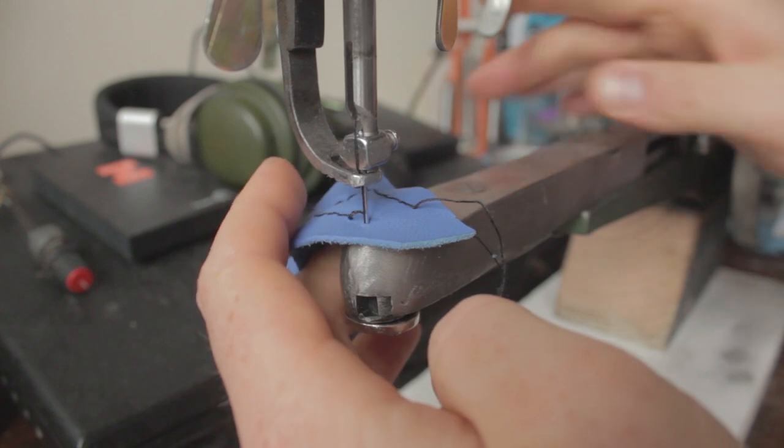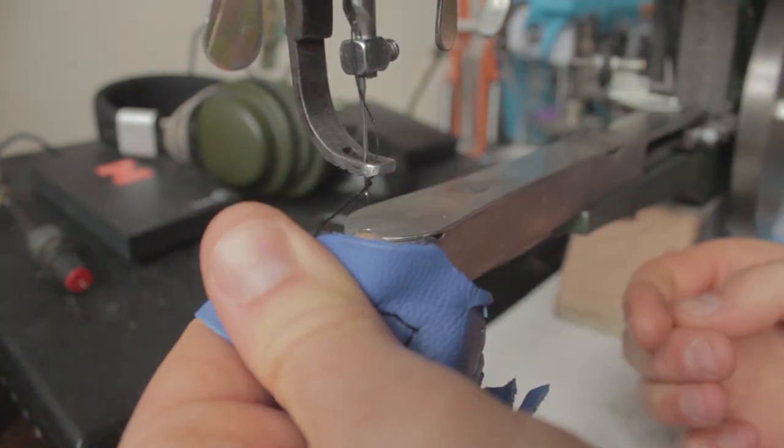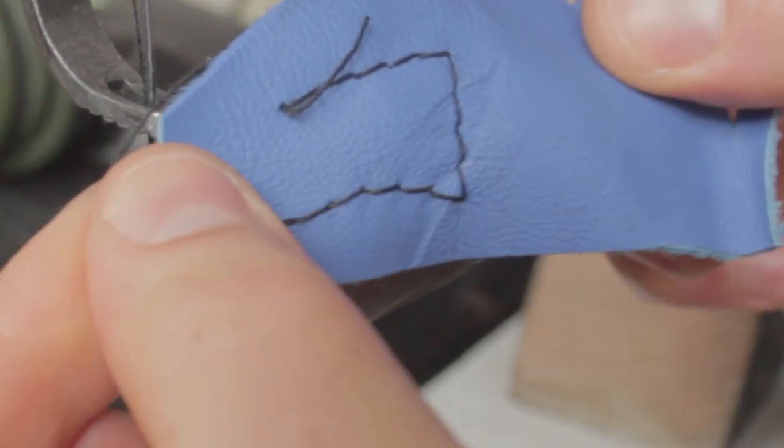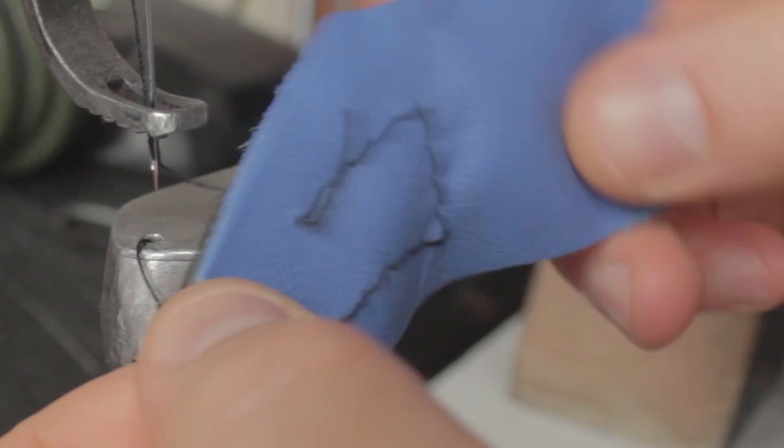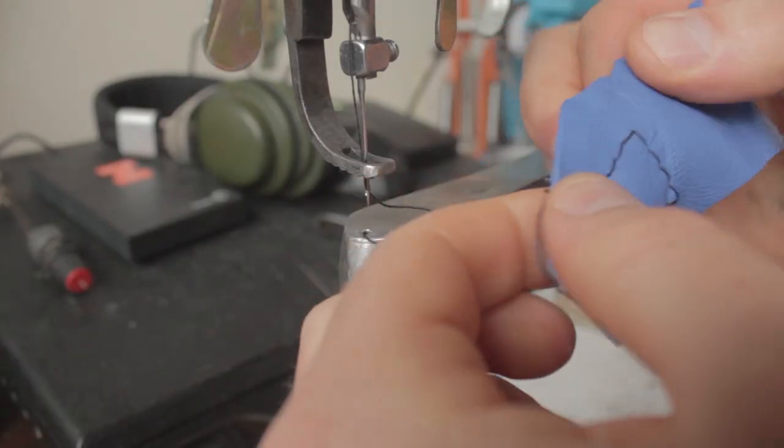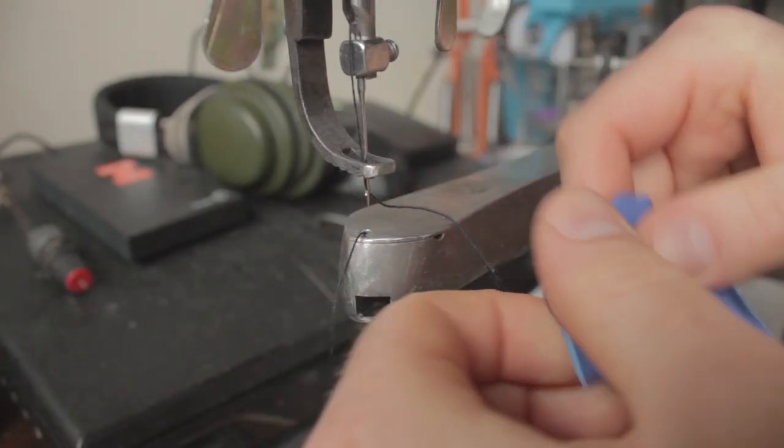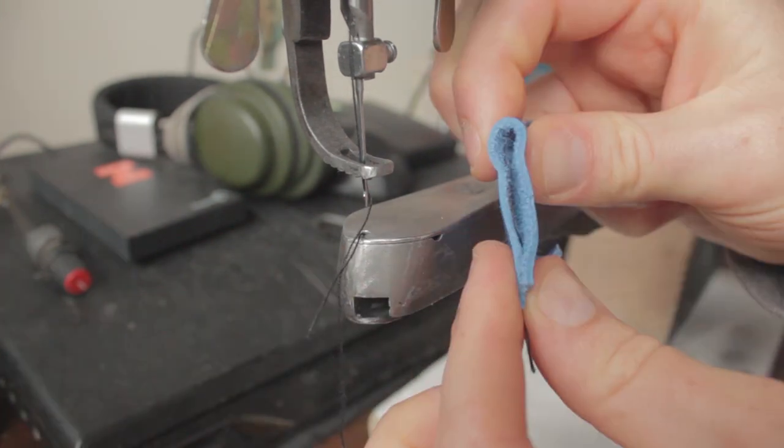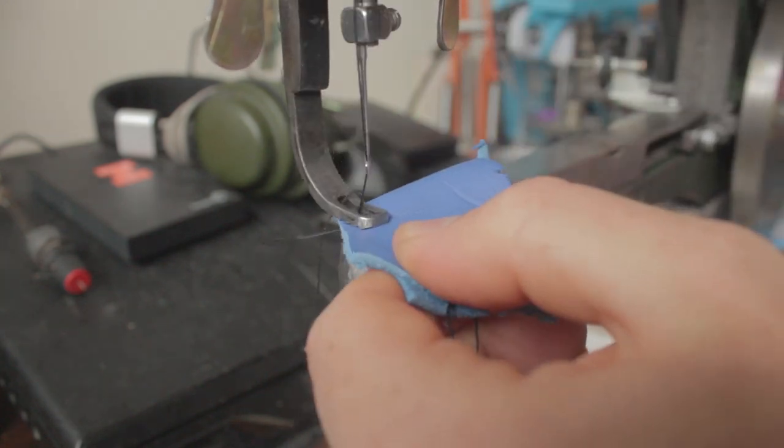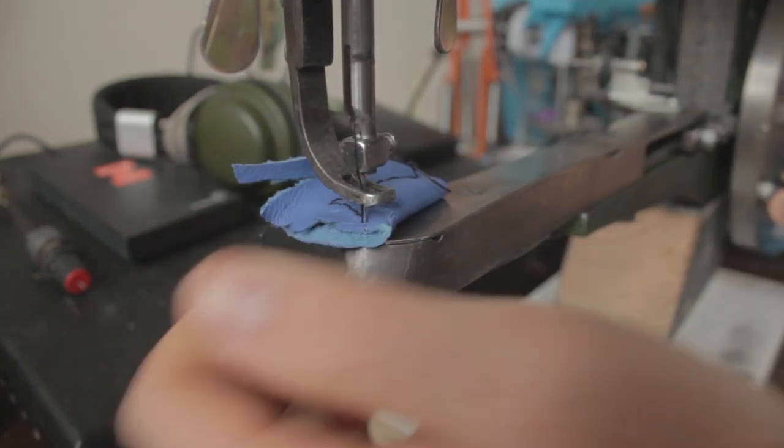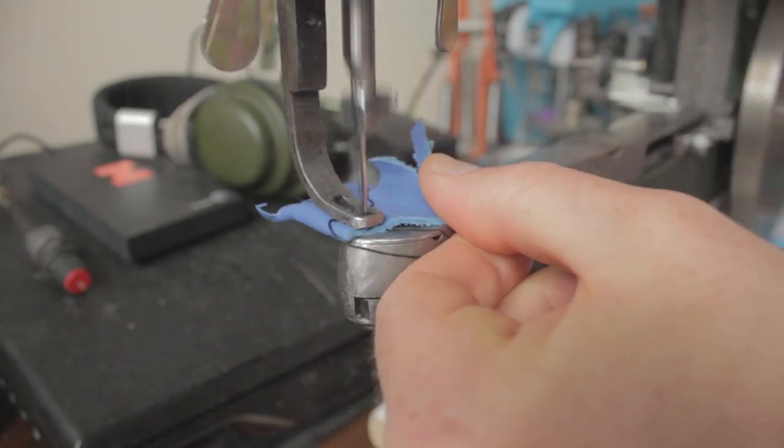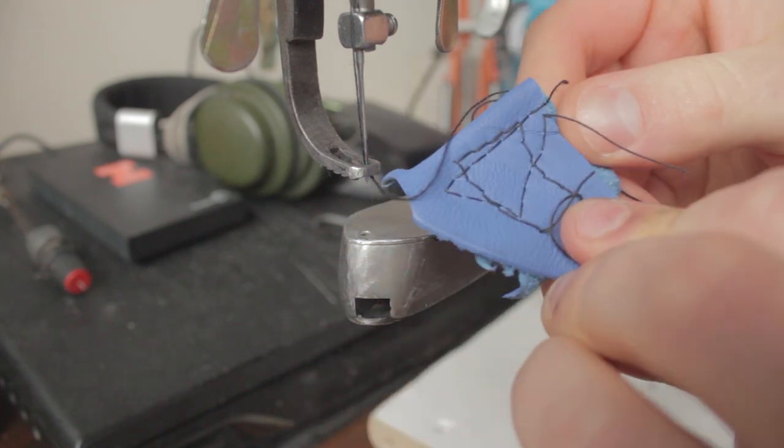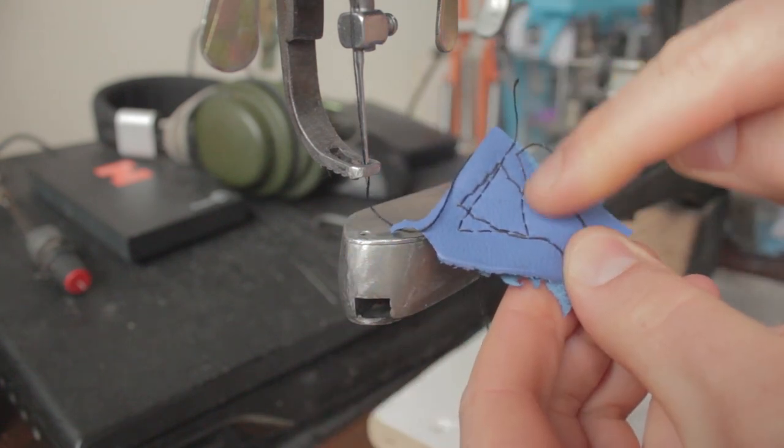There we have it. So it's pretty good on both sides. Tension could probably be adjusted a little bit but it works. Let's try doing double. Give that a go. There we go. Hard to see on that side but you can see the triangle a bit on top. Went through two layers of leather just fine.